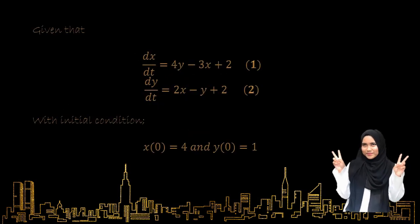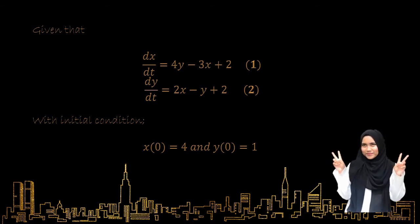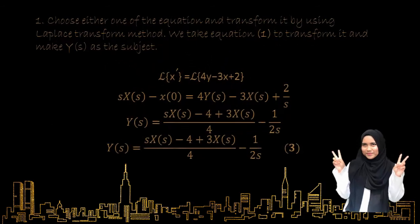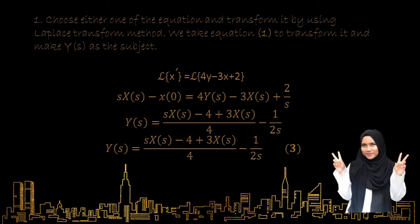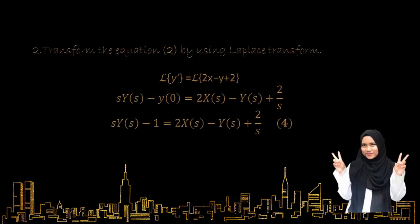Given equation 1: dx/dt equals 4Y minus 3X plus 2; and equation 2: dy/dt equals 2X minus Y plus 2; with initial conditions x(0) equals 4 and y(0) equals 1. First, we choose either one of the equations to apply Laplace transform. We choose to transform equation 1 and make Y in terms of S as the subject, labeling it equation 3. Next, we transform equation 2 using Laplace, labeling it equation 4.